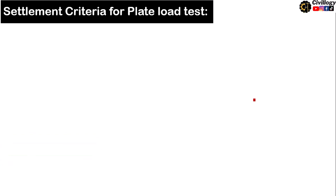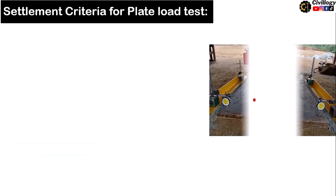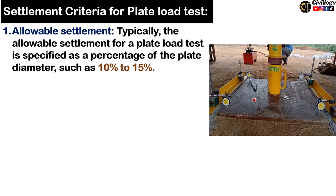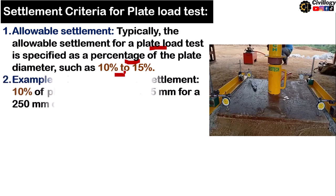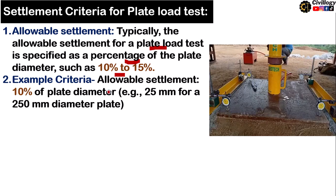Regarding settlement criteria, the allowable settlement is typically specified as a percentage of the plate diameter, such as 10% to 15%. For example, if the allowable settlement is 10% of the plate diameter and you have a plate with a diameter of 250 millimeters, then the allowable settlement will be 25 millimeters.